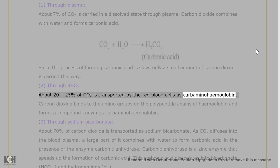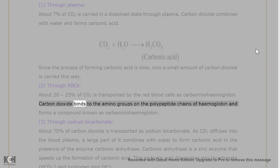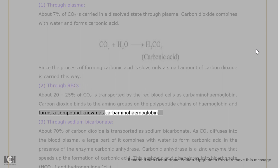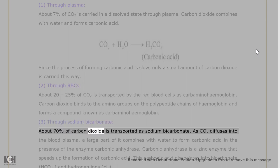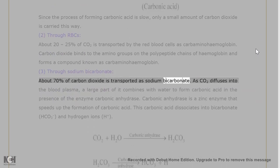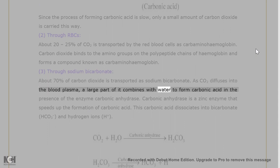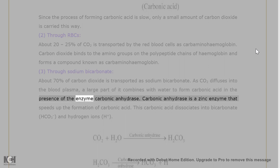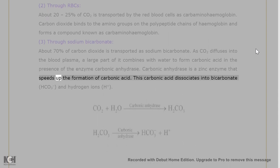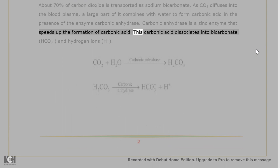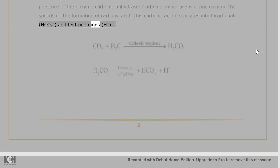(2) Through RBCs: About 20–25% of CO2 is transported by red blood cells as carbaminohemoglobin. Carbon dioxide binds to the amino groups on the polypeptide chains of hemoglobin to form carbaminohemoglobin. (3) Through sodium bicarbonate: About 70% of CO2 is transported as sodium bicarbonate. As CO2 diffuses into blood plasma, it combines with water to form carbonic acid in the presence of the enzyme carbonic anhydrase, a zinc enzyme. This carbonic acid dissociates into bicarbonate (HCO3⁻) and hydrogen ions (H⁺).